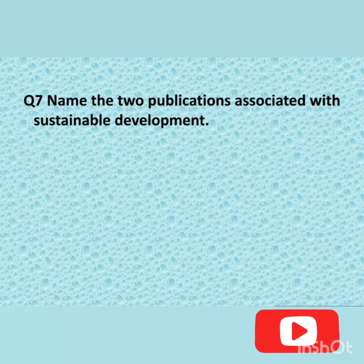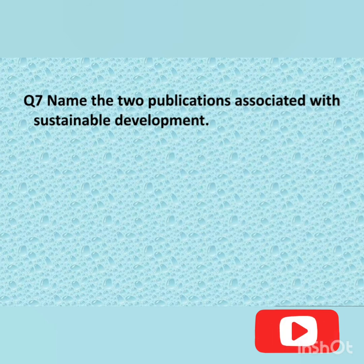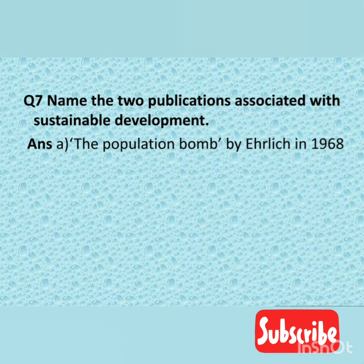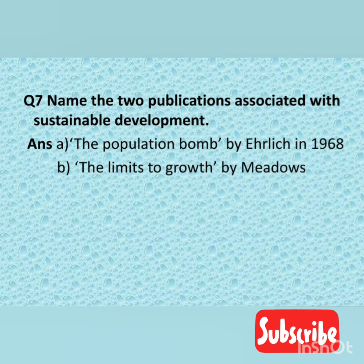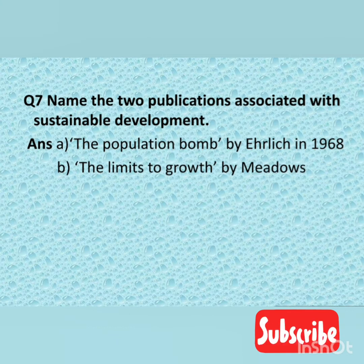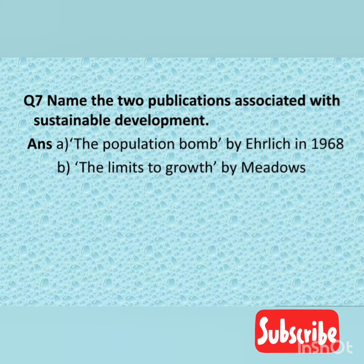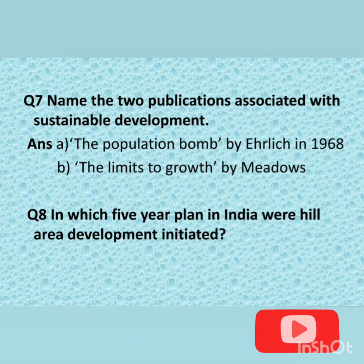Question number seven: Name the two publications associated with sustainable development. The answer is: first, The Population Bomb by Ehrlich in 1968, and second, The Limits to Growth by Meadows.